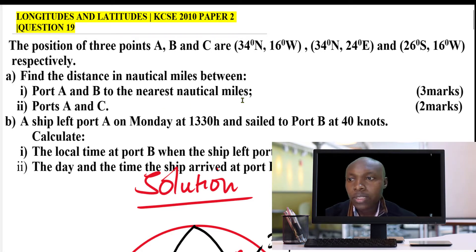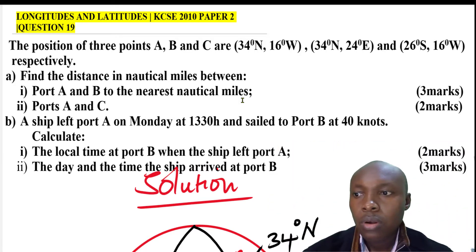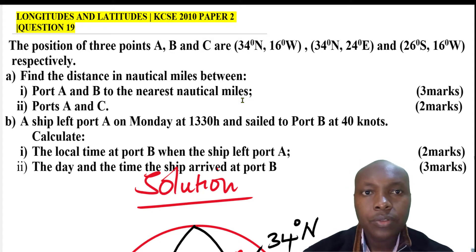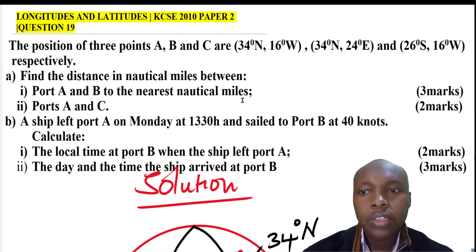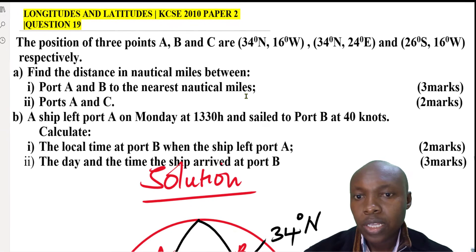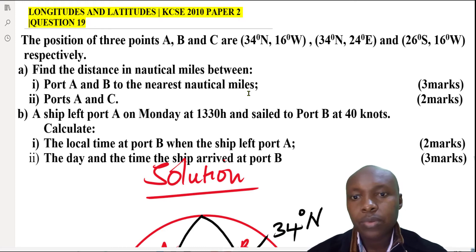Question part A: find the distance in nautical miles between (i) ports A and B, to the nearest nautical mile, and (ii) ports A and C. Part B: a ship left port A on Monday at 13:30 hours and sailed to B at 40 knots. Calculate (i) the local time at B when the ship left port A, and (ii) the day and time the ship arrived at port B.